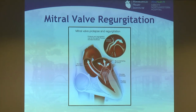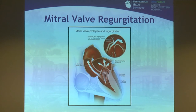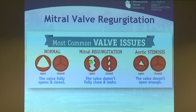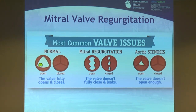Mitral valve regurgitation, as already pointed out, is just a leaky valve — or insufficiency — a valve that doesn't close perfectly. Mitral is just the name for one of the valves, and regurgitation means the blood goes in the wrong direction, back where it came from. These slides from the American College of Cardiology and American Heart Association help make it easier to understand. Regurgitation means the valve opens well but still has holes when it closes, so blood sneaks through. Stenosis means the valve opens but not as well as it should.